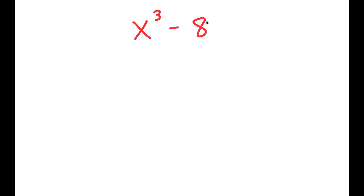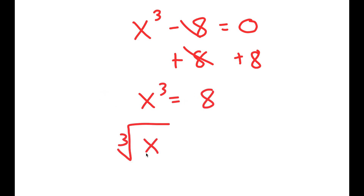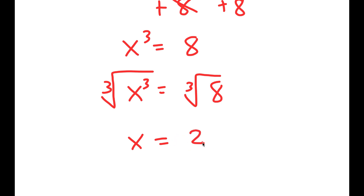In this video, I'm going to solve the equation x to the power of 3 minus 8 is equal to 0. How most people solve this equation is they add 8 on both sides, so they get x to the power of 3 is equal to 8. Then they take the cube root on both sides — the cube root of x to the power of 3 is x, and the cube root of 8 is 2, so they get x equals 2, which is a solution to this equation.